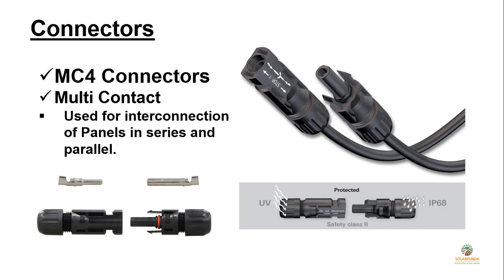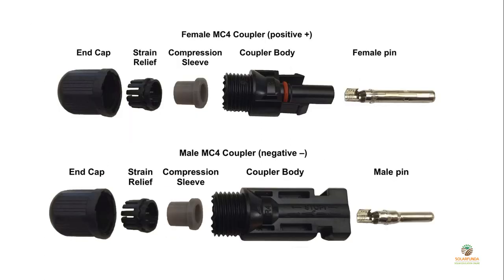The male and female connectors interlock when connected to each other. MC4 connectors are UV protected and have an IP68 rating, so they are waterproof and dustproof. The components of an MC4 connector include: an end cap, strain relief, a compressive sleeve which holds the input cable, a coupler body, and male and female pins. The input cable gets attached to the pin, which locks into the coupler body. With this, you are ready to interconnect solar panels in series and parallel.